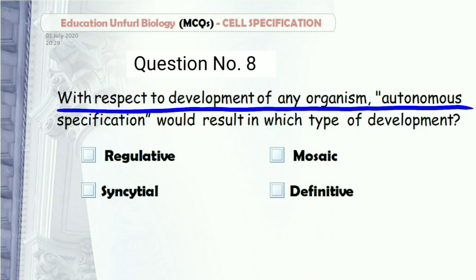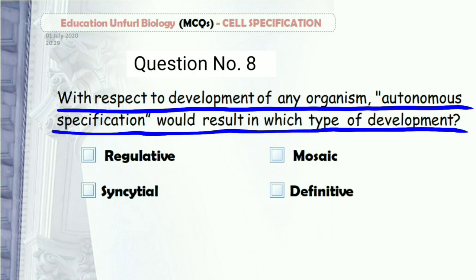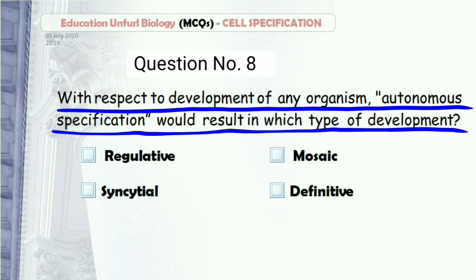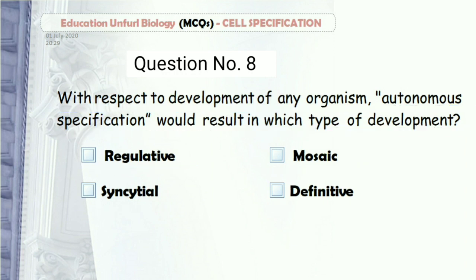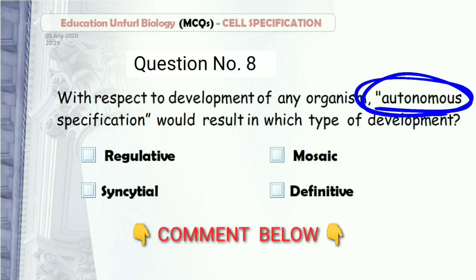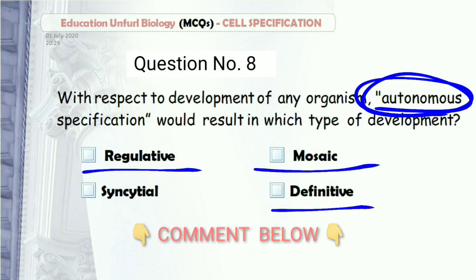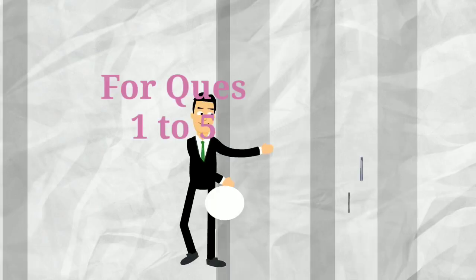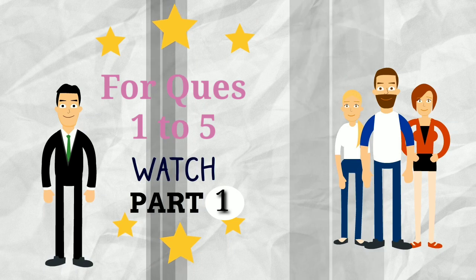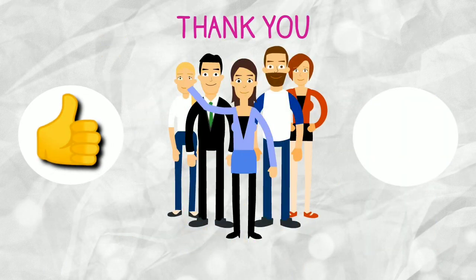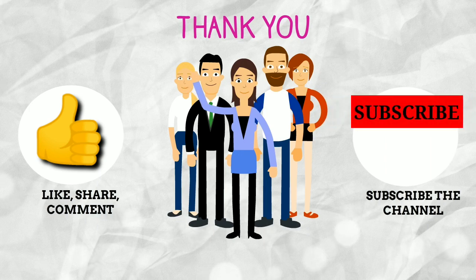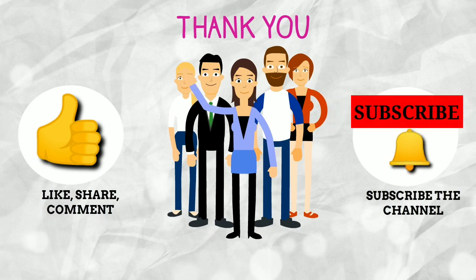Question number 8. With respect to development of any organism, autonomous specification would result in which type of development: regulative, mosaic, definitive, or syncytial? I will not give the answer — you tell us in the comment box. Think about what kind of development results from autonomous specification. Answer below in the comment box. That's it for today. If you like the video, please hit the like button and share with your friends. Subscribe to Education Unfurled Biology for more such content. Have a good day, learners, and keep exploring. Thank you.